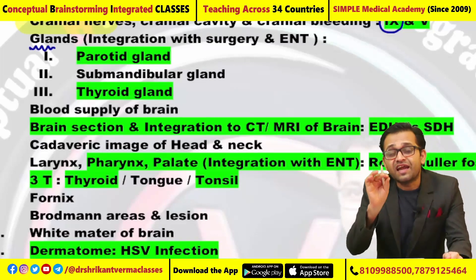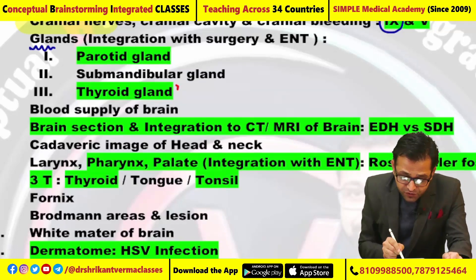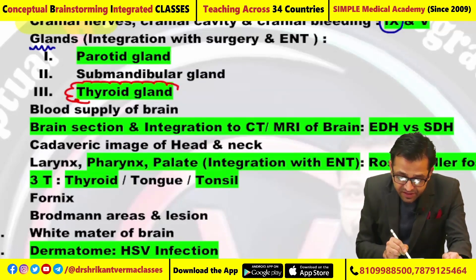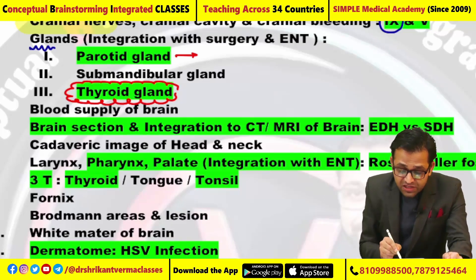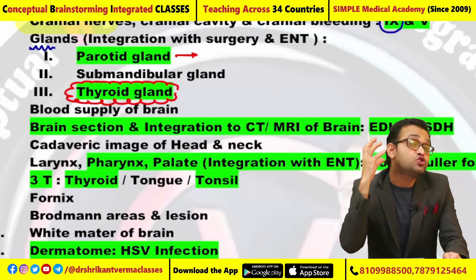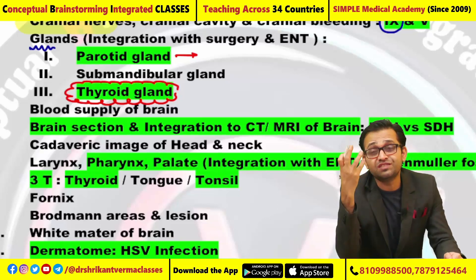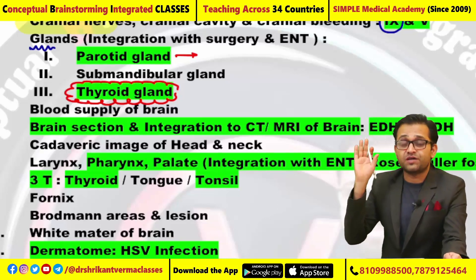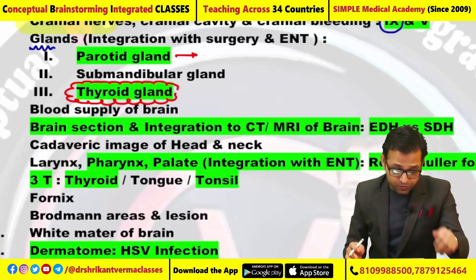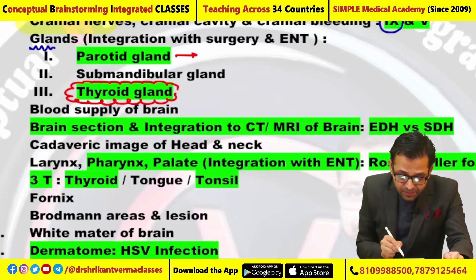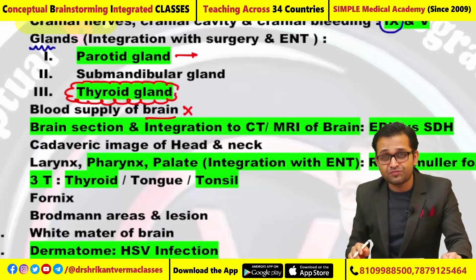Regarding glands, many questions were asked from the thyroid gland this time, integrated with surgery and medicine. The parotid gland question had been asked — there was a swelling just below the ear, which nerve is affected — such kind of question was there. Please inform me of the exact question and pattern with the options. For blood supply of the brain, right now no question was asked directly, but subarachnoid hemorrhage had been asked.